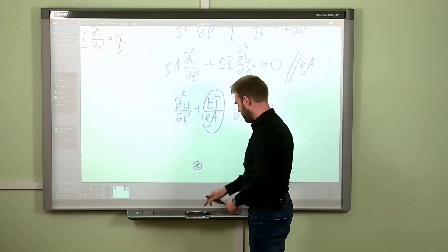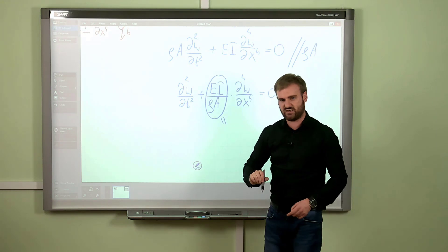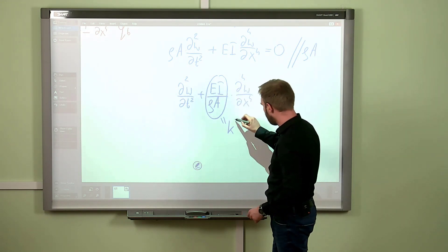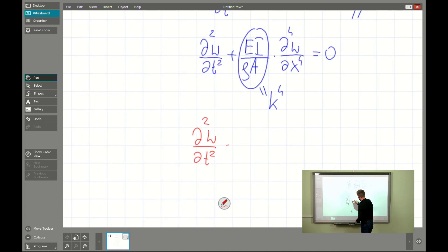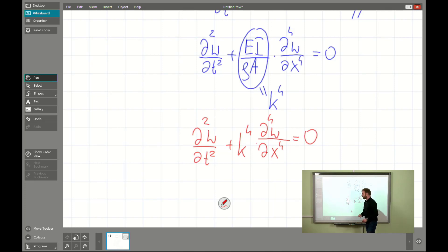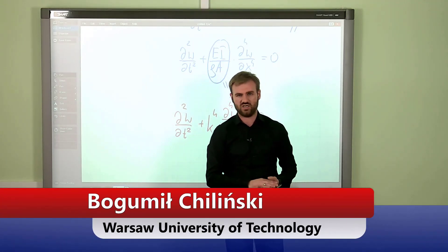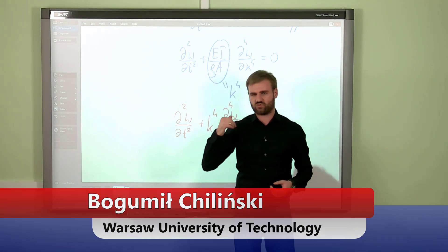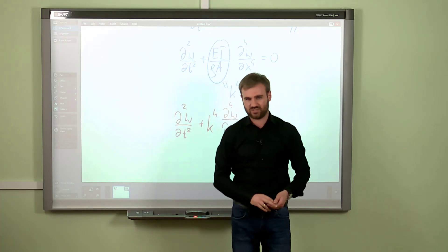Typically we introduce a special constant K to the fourth power to represent the EI over rho A term, since the derivative order is four. As a final result, the acceleration of the beam equals K to the fourth times the fourth derivative of W with respect to X. This is the final form of the governing equation for transversal beam vibration. As you see, it isn't especially complicated, and it's quite similar to the wave equation describing vibration of a string or rope. Thank you for your attention — see you next time.